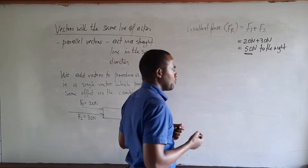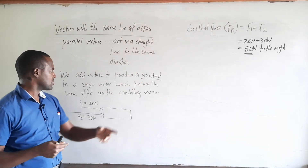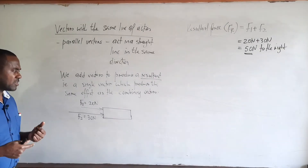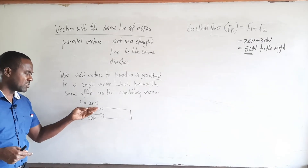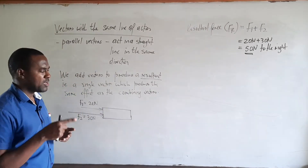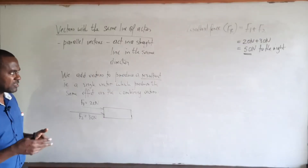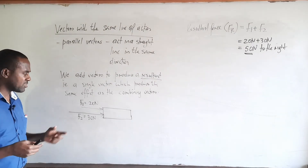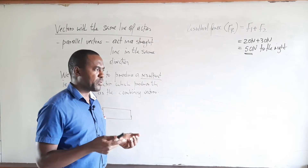We've stated the magnitude and direction of the resultant. Earlier we said a resultant is a single vector that produces the same effect as the combining vectors. For example, if two persons were pushing this box — one with 20 newtons and one with 30 newtons — the same effect would be obtained if one person pushed with 50 newtons in the same direction. Whenever vectors act in the same direction along a straight line, we simply add their magnitudes.